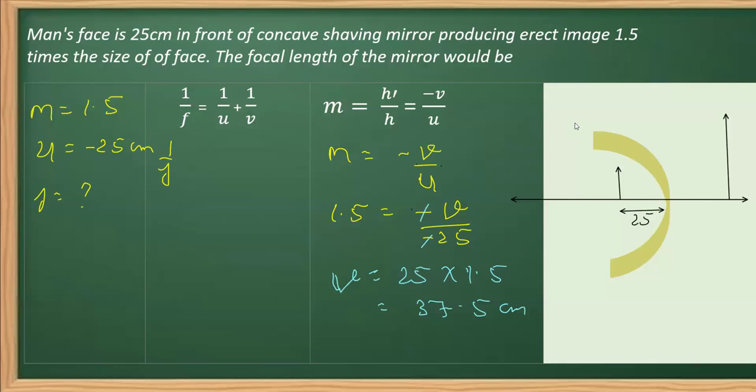This is 1 over F equals 1 over U plus 1 over V. I will be writing minus 1 over 25 and this is positive, so that is positive 1 over 37.5.